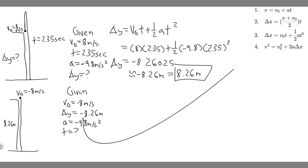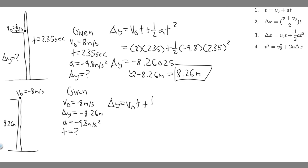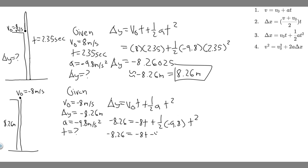We use the same kinematic equation: delta Y equals V₀ times T plus one-half AT squared. This time we're solving for T instead of delta Y. Plugging in: -8.26 equals (-8)T plus one-half times (-9.8) times T squared. Simplifying: -8.26 equals -8T minus 4.9T squared. Moving all terms to one side gives us the quadratic: 4.9T² + 8T - 8.26 = 0.